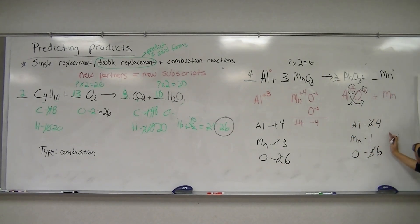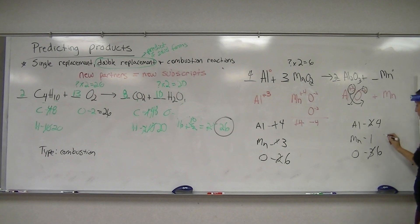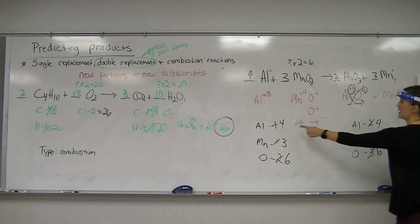So what number do I need here to make it three? Just a three. Because a coefficient, or a subscript of one, so three times one gives me three. So now it's balanced.